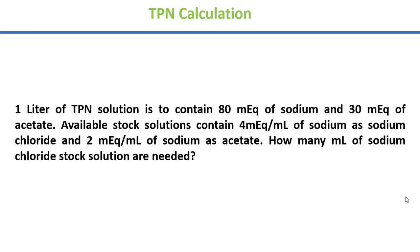Agar is sawal ko hum samajhne ki koshish karein to humse kaha ja raha hai ki humein 1 liter TPN solution banana hai jis mein 80 milliequivalents of sodium hoon aur 30 milliequivalents of acetate hoon. Jo available stock solutions humare paas mojood hain, usmein 4 milliequivalents per mL sodium mojood hain as sodium chloride. Aur 2 milliequivalents per mL sodium mojood hain as acetate. Ab humein yahan par yeh jaana hai ki humein kitne mL ka sodium chloride solution tayyar karenge.